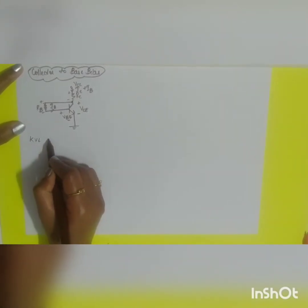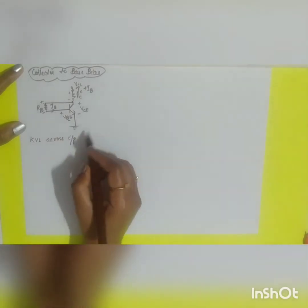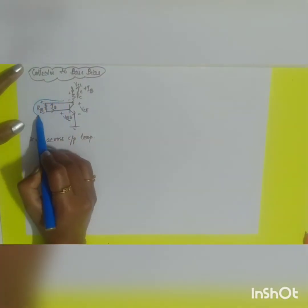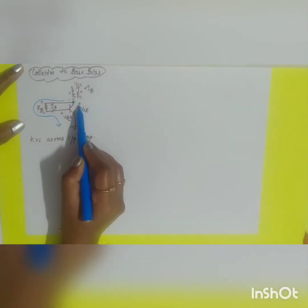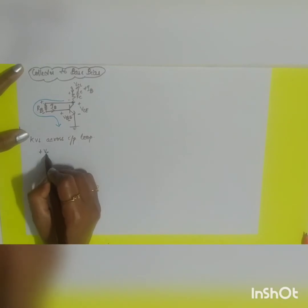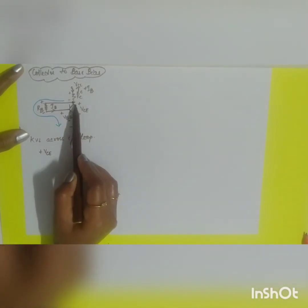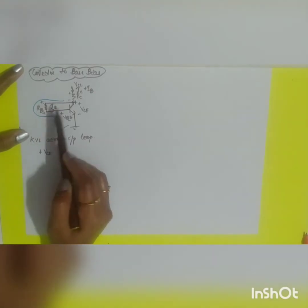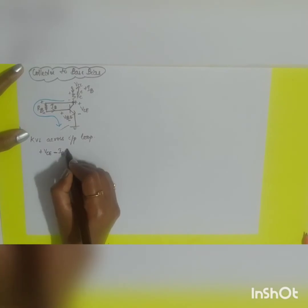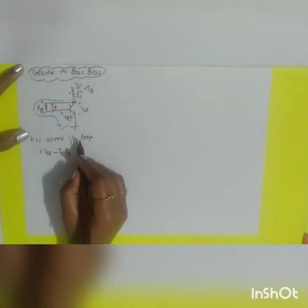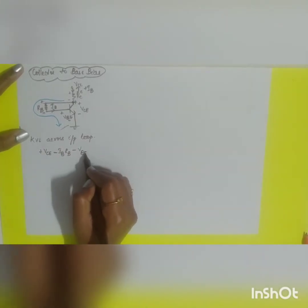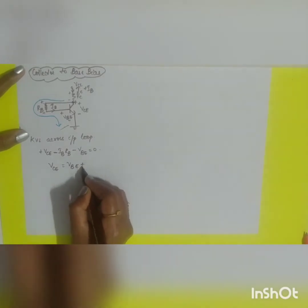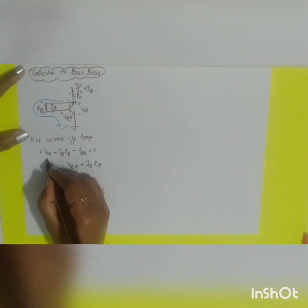Applying KVL to the input loop for collector-to-base bias: the supply here is VCE, not VCC. So: plus VCE, minus IB·RB, minus VBE equals zero. Rearranging gives VCE = VBE + IB·RB. This is equation one for this configuration.